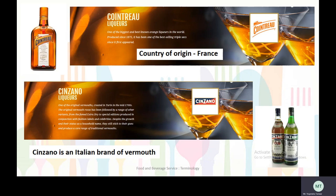Cointreau is a liqueur — one of the biggest and best-known orange liqueurs in the world, produced since 1875. It has been the best-selling triple sec since it first appeared. Country of origin is France. Cinzano is one of the original Vermouths created in the mid-1700s. The original Vermouth Rosso has been followed by a range of other variants. Despite their growth and household name status, they still produce a core range of traditional Vermouths.